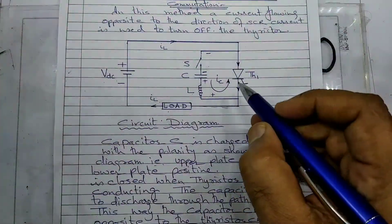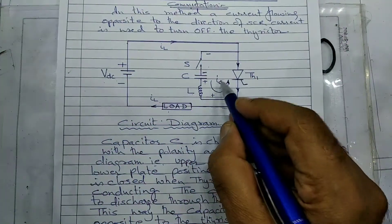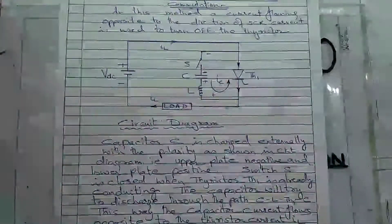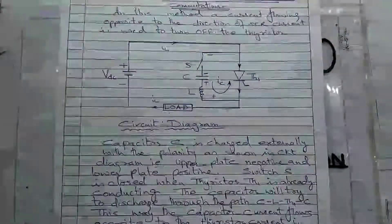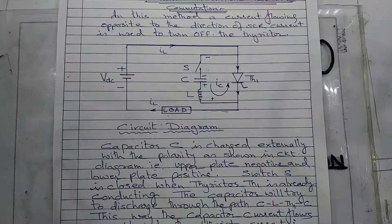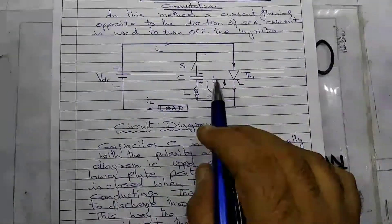So at an instant when IC is equal to IL, the thyristor is forcefully turned off. This is called forced commutation.